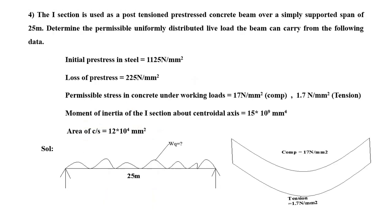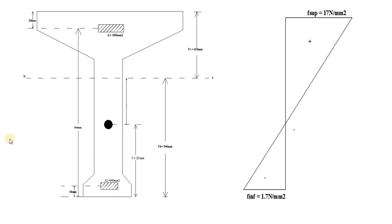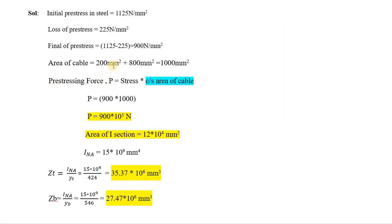Please understand the difference. In the question they have given area of cross section, which means the whole area of the I-section. Here we are calculating area of cable — whatever cables we had, A1 and A2, we are calculating that area. The first cable was 200 mm square and the second cable is 800 mm square. Put together it is 1000 mm square. Remember, it is the area of cable: first cable plus second cable gives 1000 mm square.